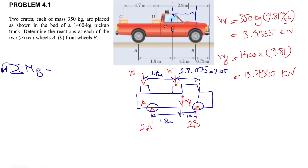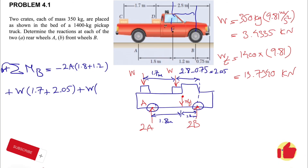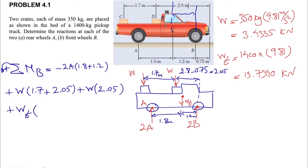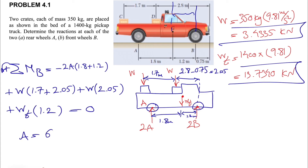Setting up the moment equation about point B: the moment of 2A is clockwise, so it is negative — negative 2A times the distance of 1.8 plus 1.2, which equals 3 meters. For the left crate, the moment is counterclockwise, so positive: W times a distance of 1.7 plus 2.05. The other crate also gives a counterclockwise moment: W times 2.05. Finally, the moment of the truck weight Wt acts over a distance of 1.2. The sum equals zero.